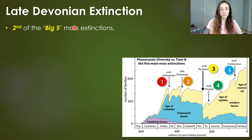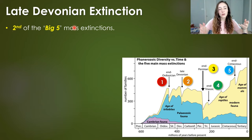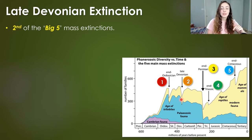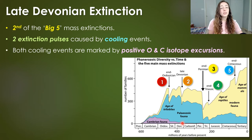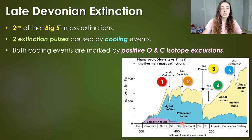The late Devonian extinction event was the second of the big five mass extinctions that have occurred throughout the Phanerozoic Eon, the eon that goes from around 550 million years ago to now. This extinction event happened around 360 million years ago at the end of the Devonian period. Two extinction pulses, caused likely by cooling events, happened during this late Devonian period, and these cooling events are both marked by positive oxygen and carbon isotope excursions.